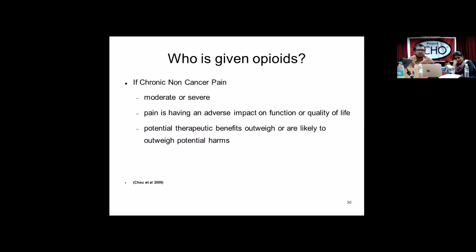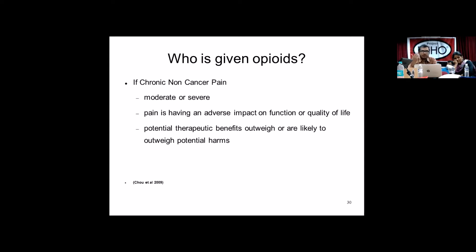Regarding who receives opioids: for patients with chronic non-cancer pain, opioids are indicated when pain is of moderate or severe intensity, the pain is having an adverse impact on the patient's function or quality of life, and the potential therapeutic benefits outweigh the potential harms. Someone with mild chronic pain will not receive opioids; only moderate or severe pain warrants opioid prescription.